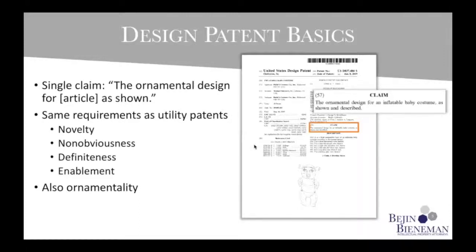One additional requirement that applies just to design patents is ornamentality — the design has to be about the appearance of a product, not about its functionality. The test for ornamentality has two parts: one, the design has to be visible, meaning not hidden on the inside of the product; and two, there has to be another way to perform whatever function that design performs. Many designs can feel more functional than ornamental, but they will often still satisfy this test as long as there's at least one other way to perform that function.